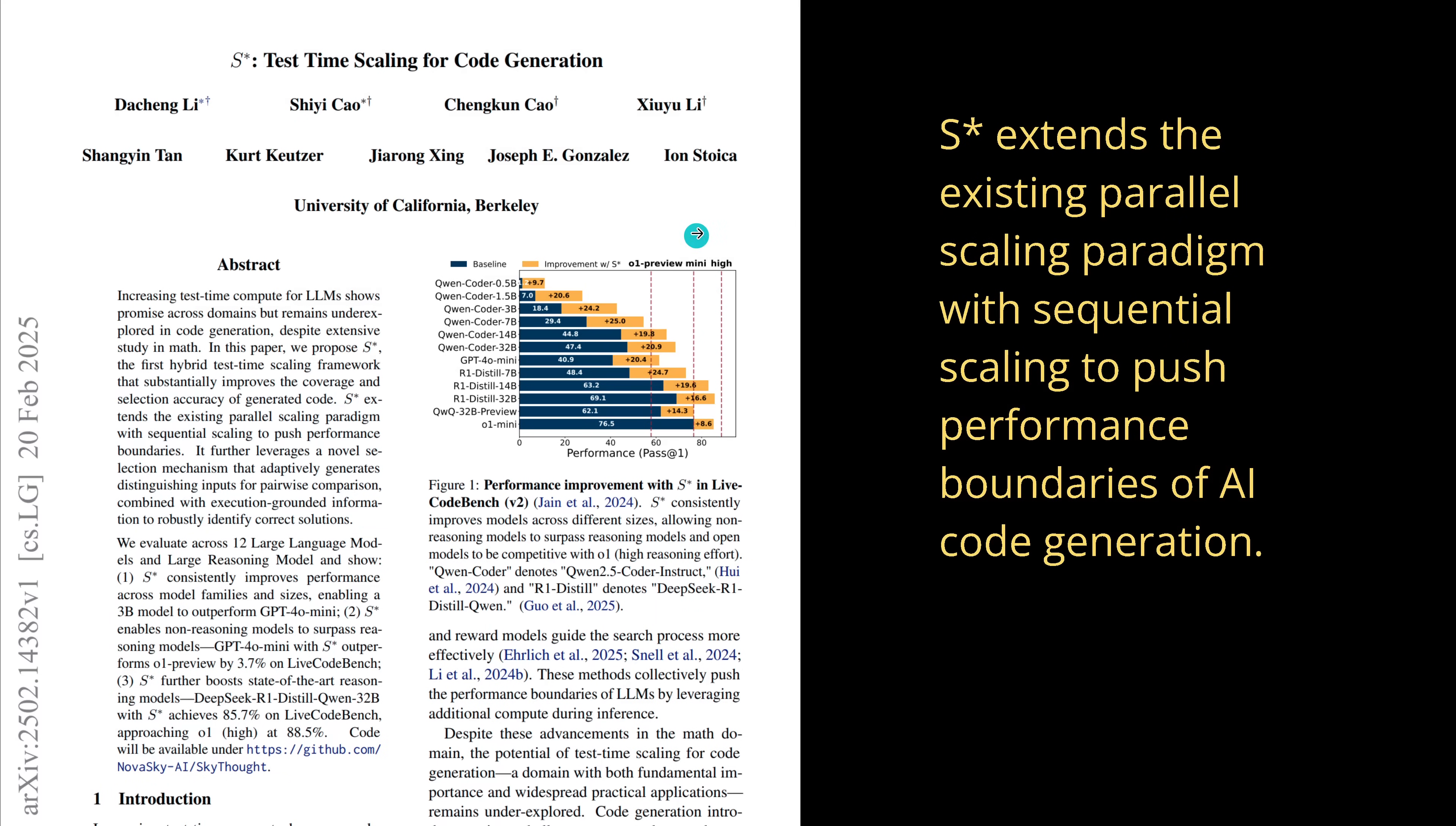This is a publication from UC Berkeley, great team, beautiful idea, February 20th 2025. They tell us S-Star test time scaling now for code generation AI. This extends the existing parallel scaling paradigm with sequential scaling to push the performance boundaries of AI code generation.